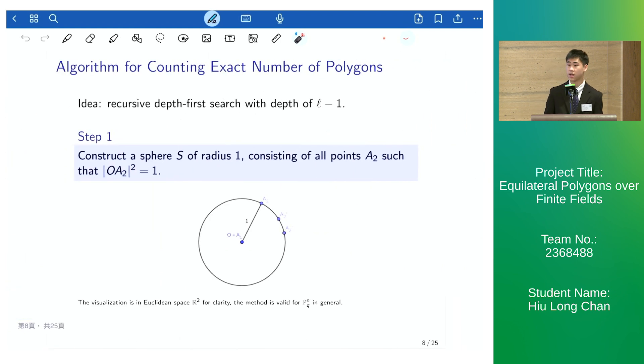How do we count the exact number of polygons? Well, we have this deterministic algorithm that employs a depth-first search with a depth of l minus 1.